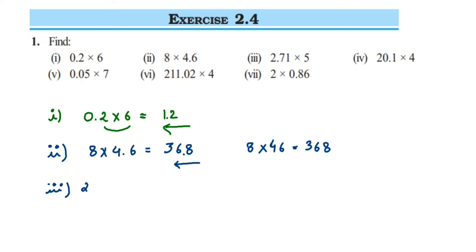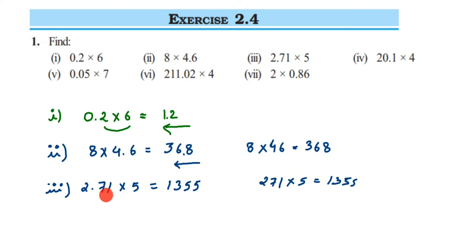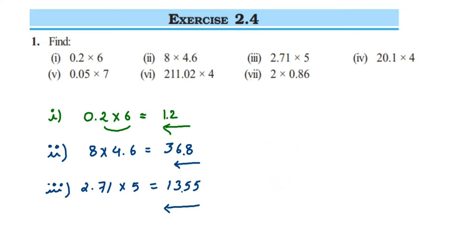The third problem is 2.71 multiplied by 5. Multiply 271 × 5 = 1355. After the decimal point we have two digits, so from the right side, after two digits — after the 5 and 5 — we place the decimal. The answer is 13.55.